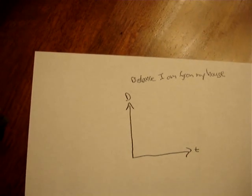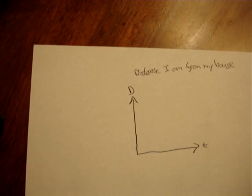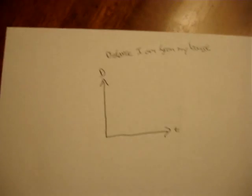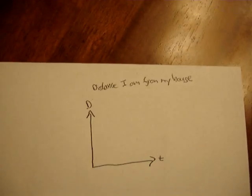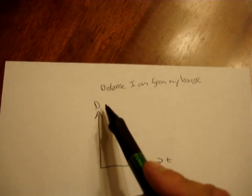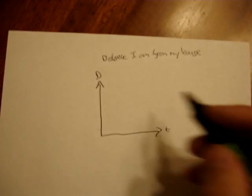And what I'm going to do is I'm going to go for a walk from my house down to the park. And I'm going to show what happens over time. This is going to represent the distance I am from my house, and this is going to represent the time.